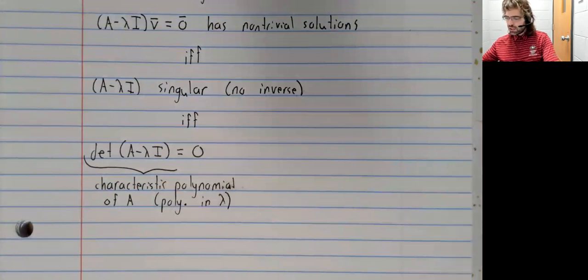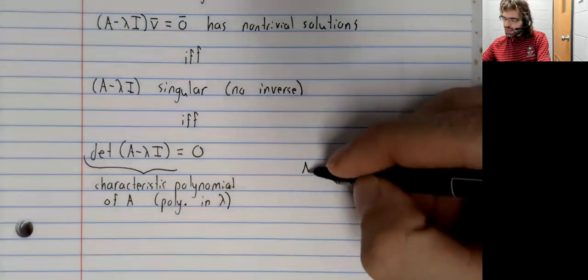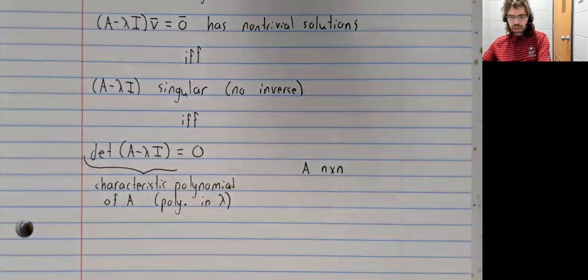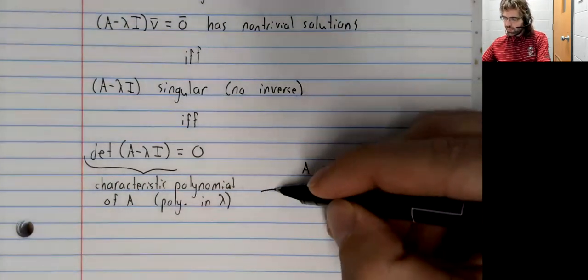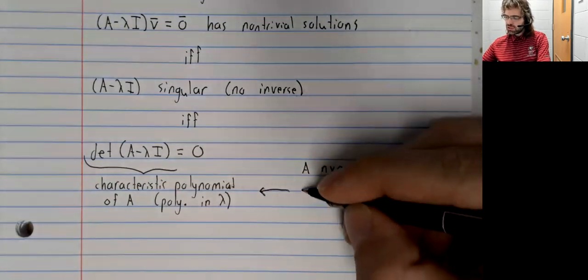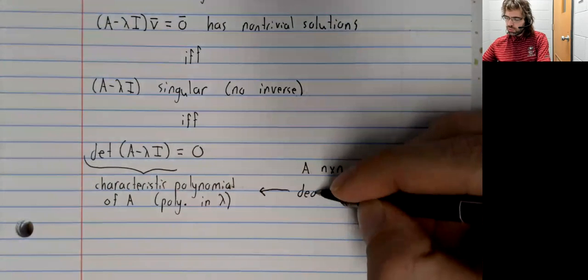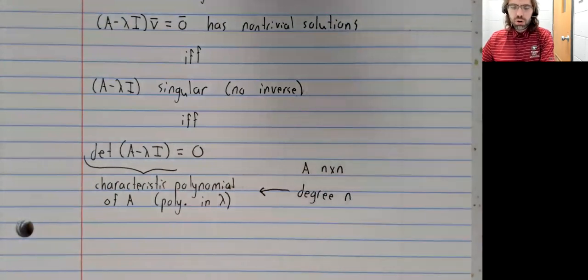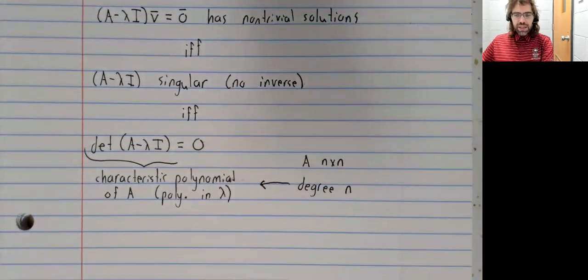of A. If A is n by n, then the characteristic polynomial is of degree n.